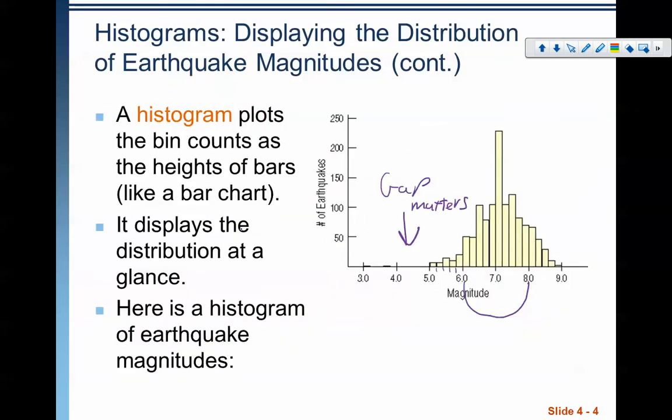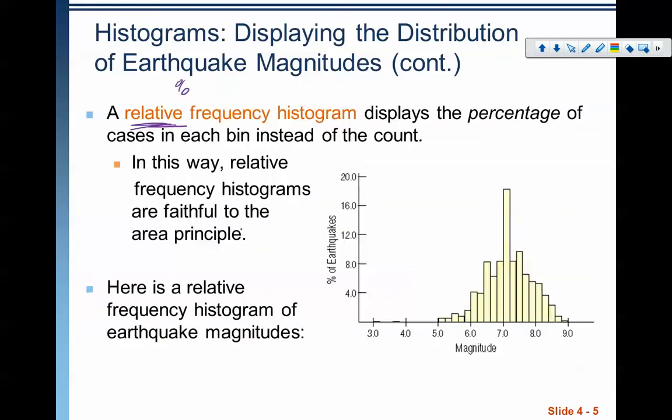Notice that the two histograms have the exact same shape. But this one, instead of showing a pure count on the left, is showing your percents. So if it says something that's relative, you need to make sure that you're reporting that in terms of percents.